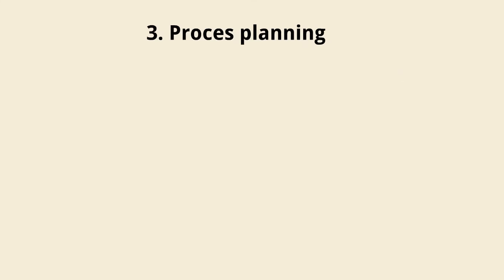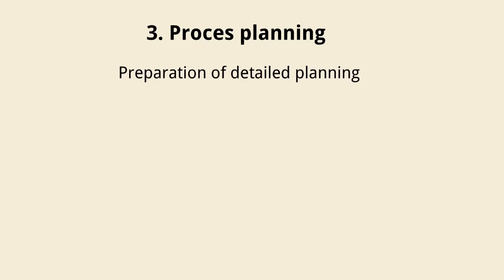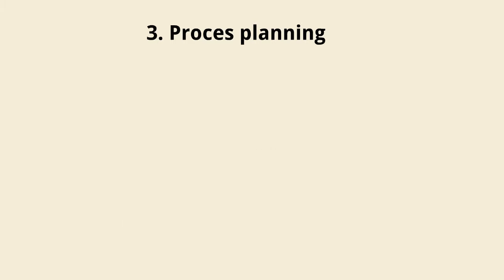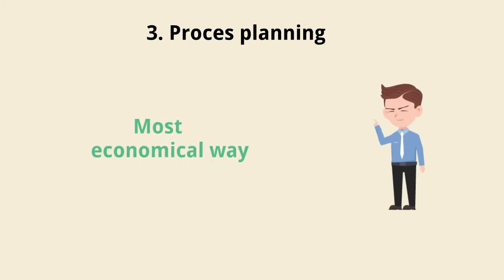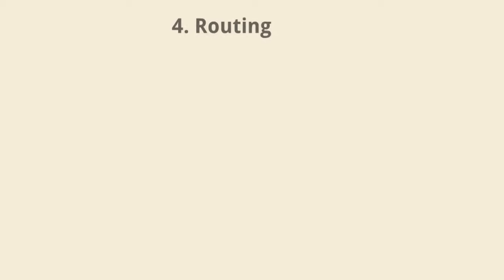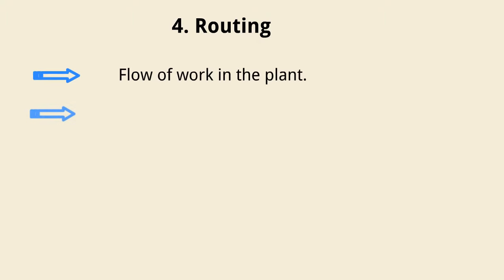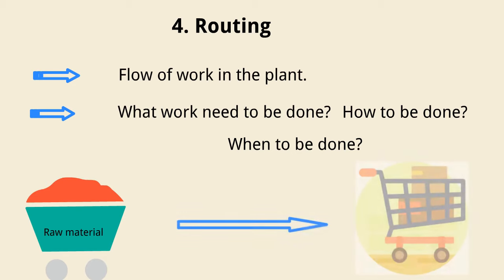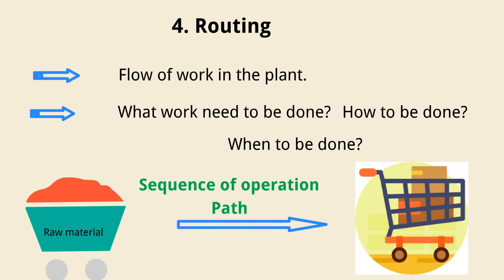3. Process planning. Process planning is the preparation of the detailed planning on how to manufacture a product; thus it is necessary to plan the process. Process planning determines the most economical way to perform an operation or number of operations to complete the manufacture. 4. Routing. Routing lays down the flow of work in the plant. It determines what work needs to be done, how to be done, and when to be done. From the raw material to the finished product, routing decides the path and sequence of operations to be performed.